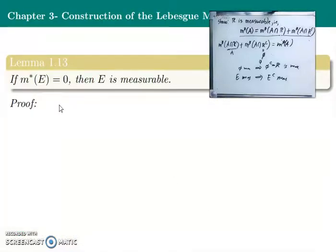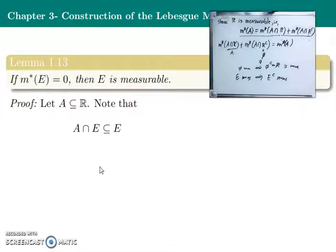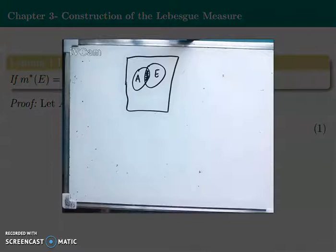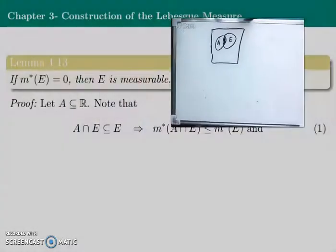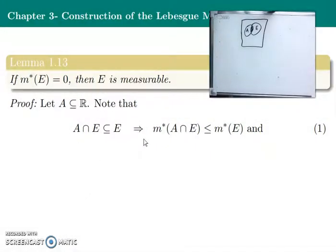Next result: if the Lebesgue outer measure of E is 0, then E is measurable. To prove this, let A be any subset of ℝ. We note that A∩E ⊆ E and A∩Eᶜ ⊆ A. Because the intersection is smaller than any of the sets involved, A∩E is a subset of E and A∩Eᶜ is a subset of A. This means λ*(A∩E) ≤ λ*(E).